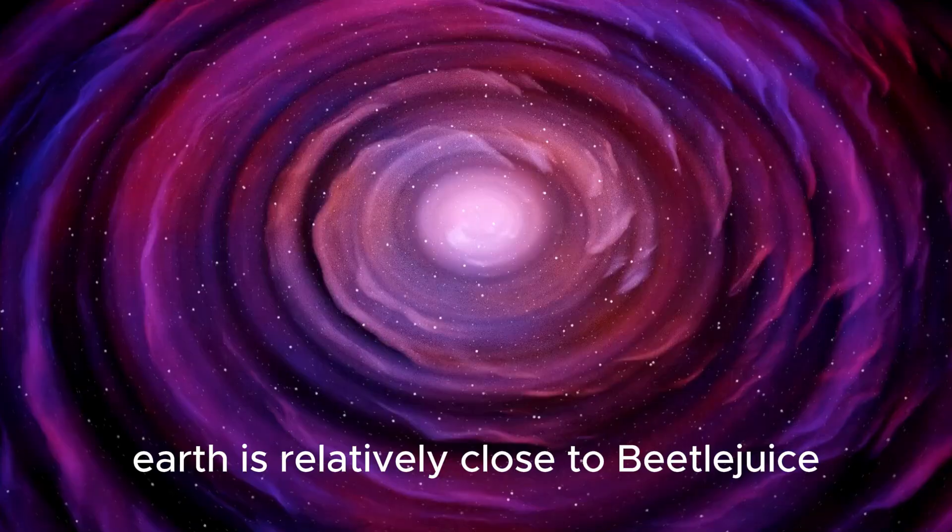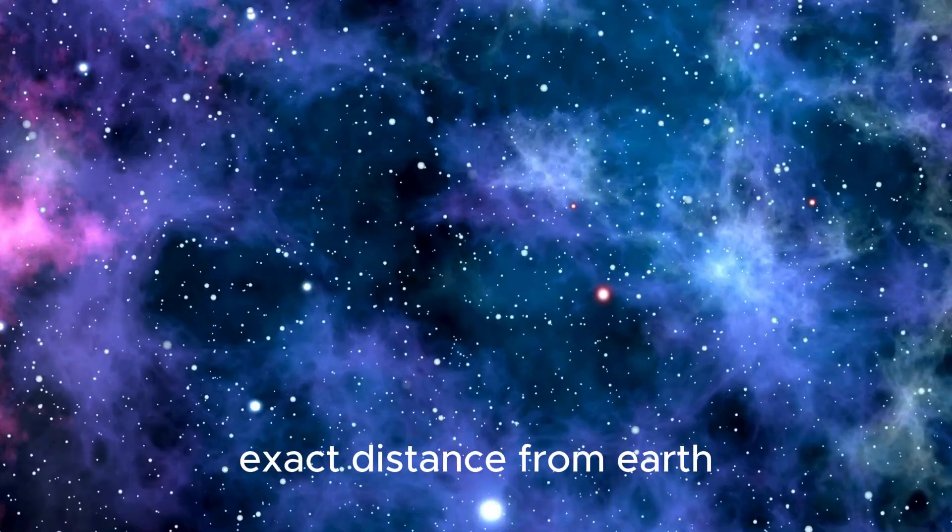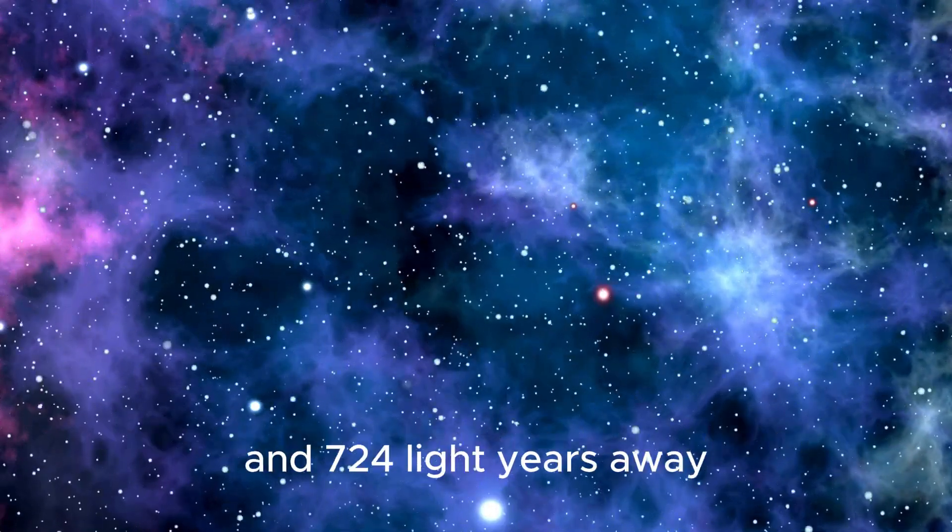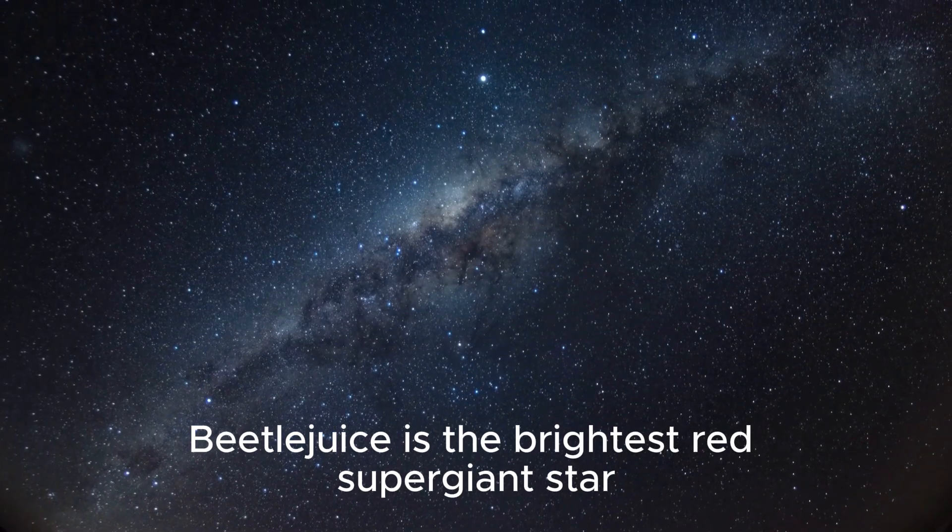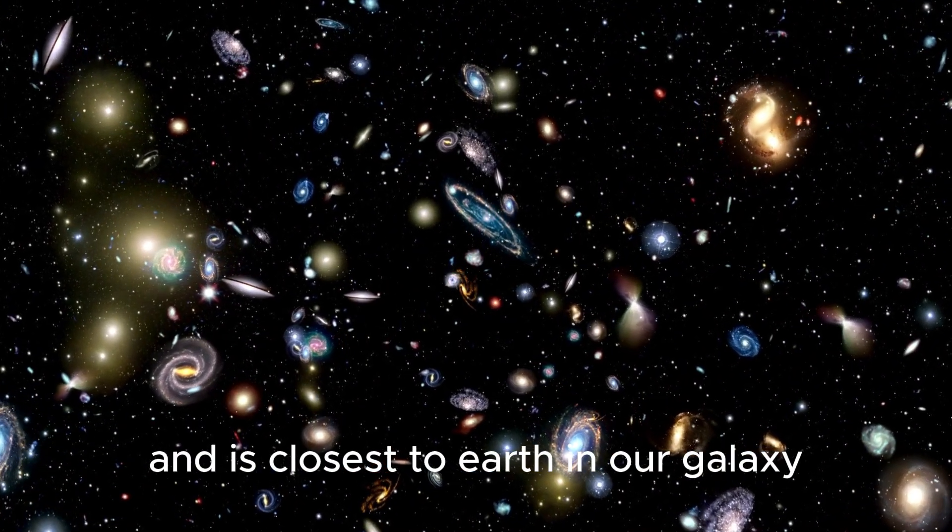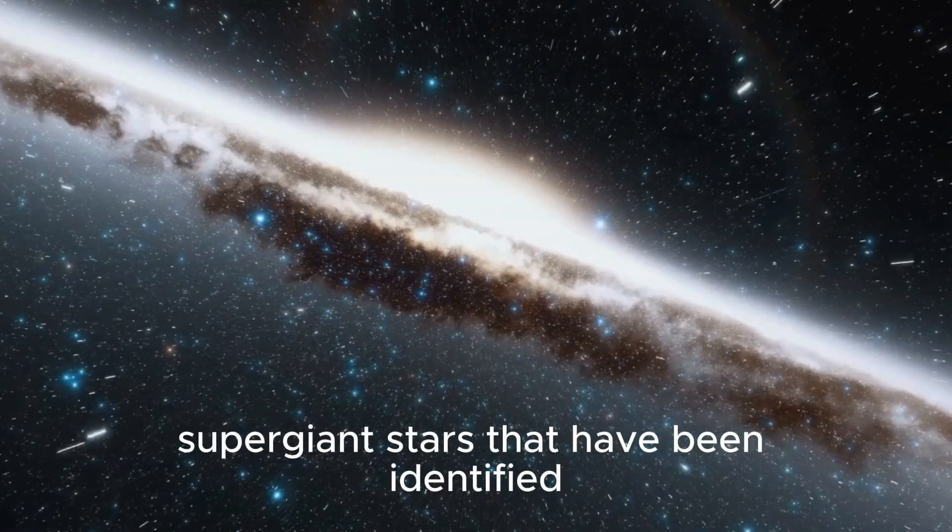Earth is relatively close to Betelgeuse. Astronomers are unable to pinpoint Betelgeuse's exact distance from Earth, although they believe it to be between 430 and 724 light-years away. Betelgeuse is the brightest red supergiant star and is closest to Earth in our galaxy. There are just 200 red supergiant stars that have been identified.